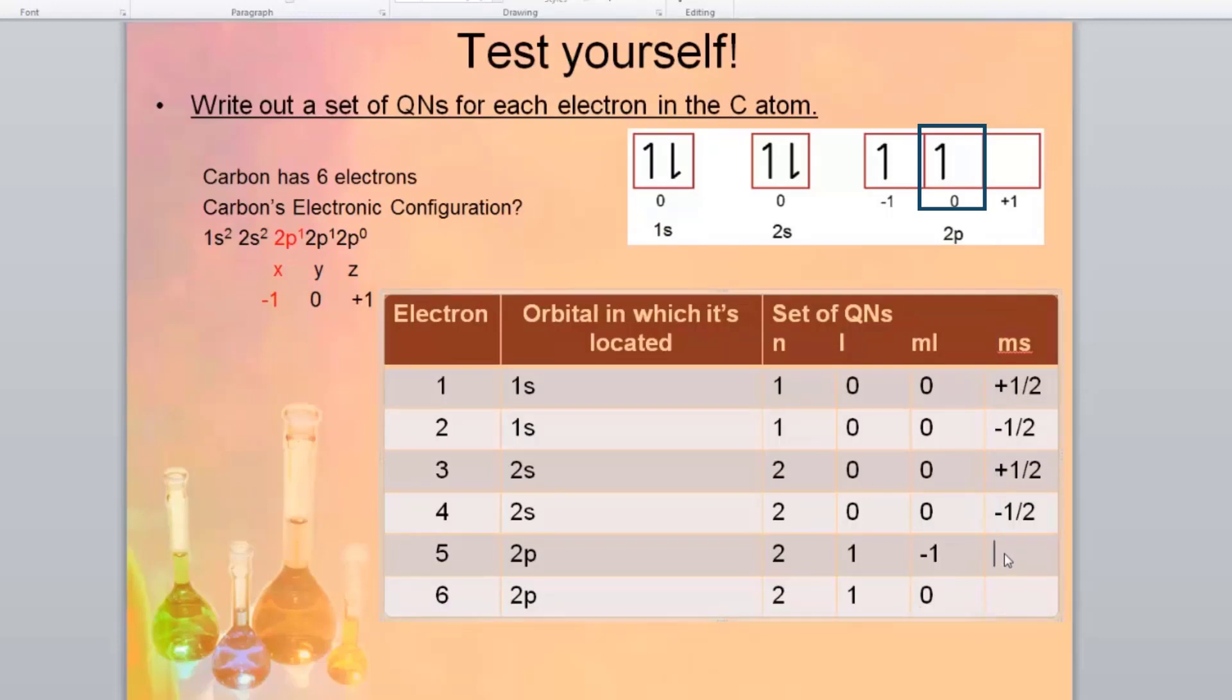So remember when you're filling your orbitals, you put one arrow up, one arrow up, one arrow up and then you do one arrow down, one arrow down, one arrow down. So the spins are the same.